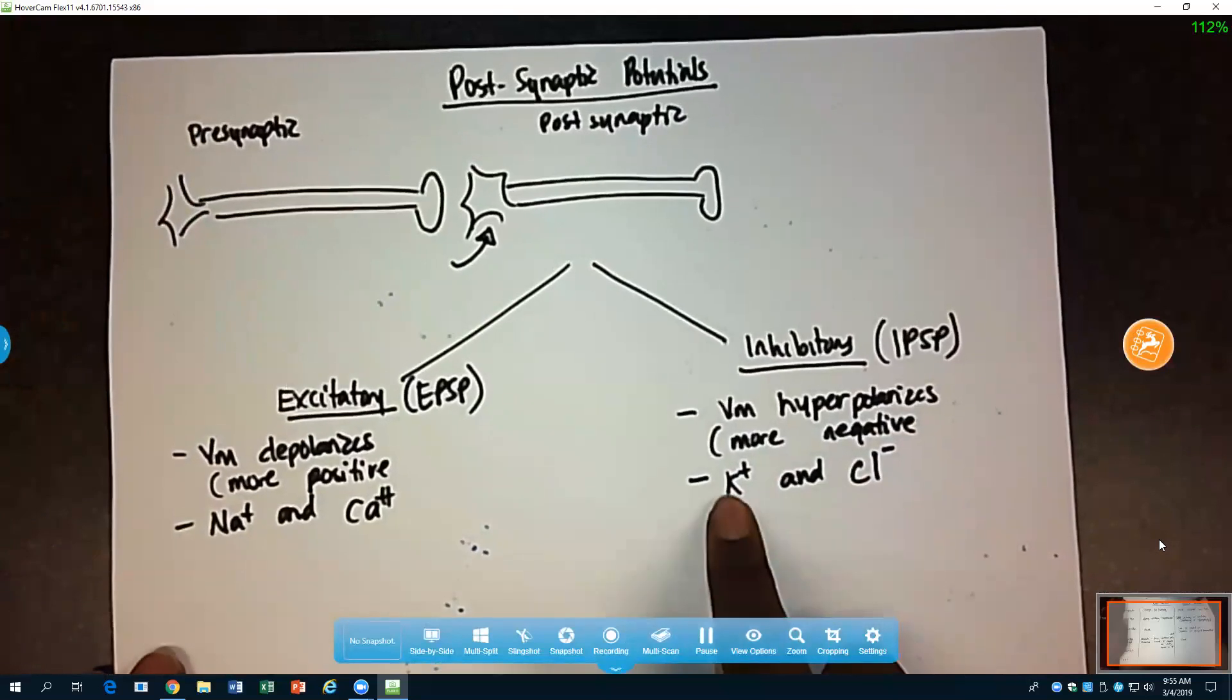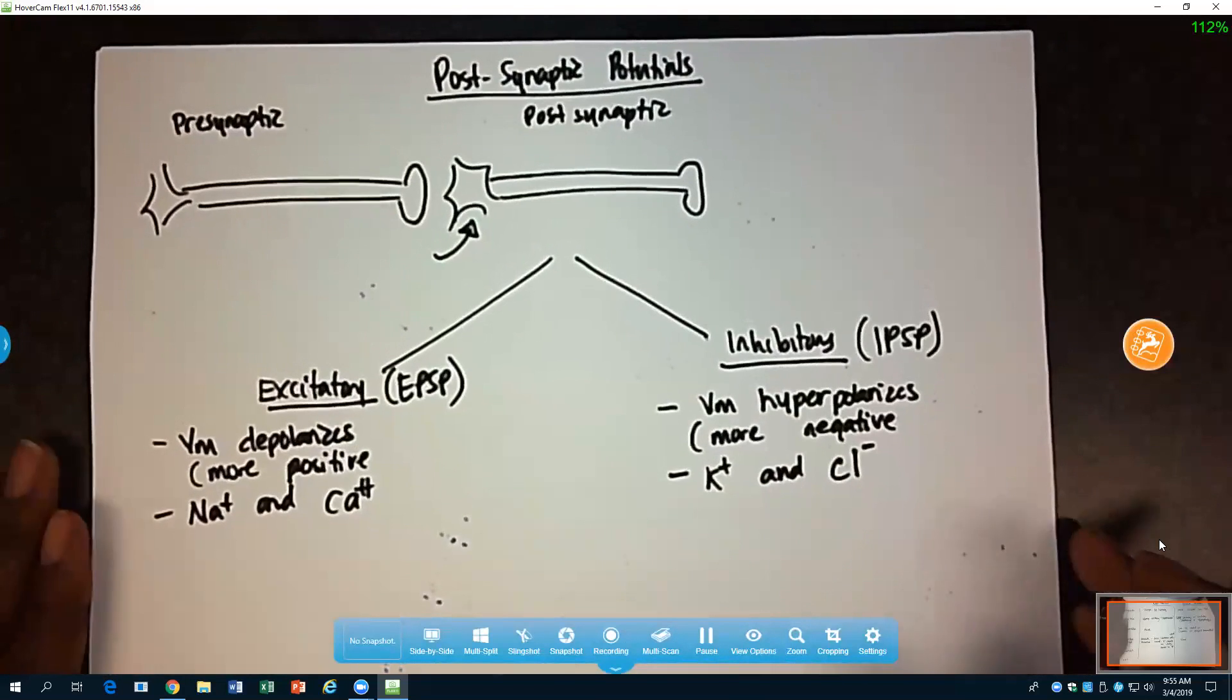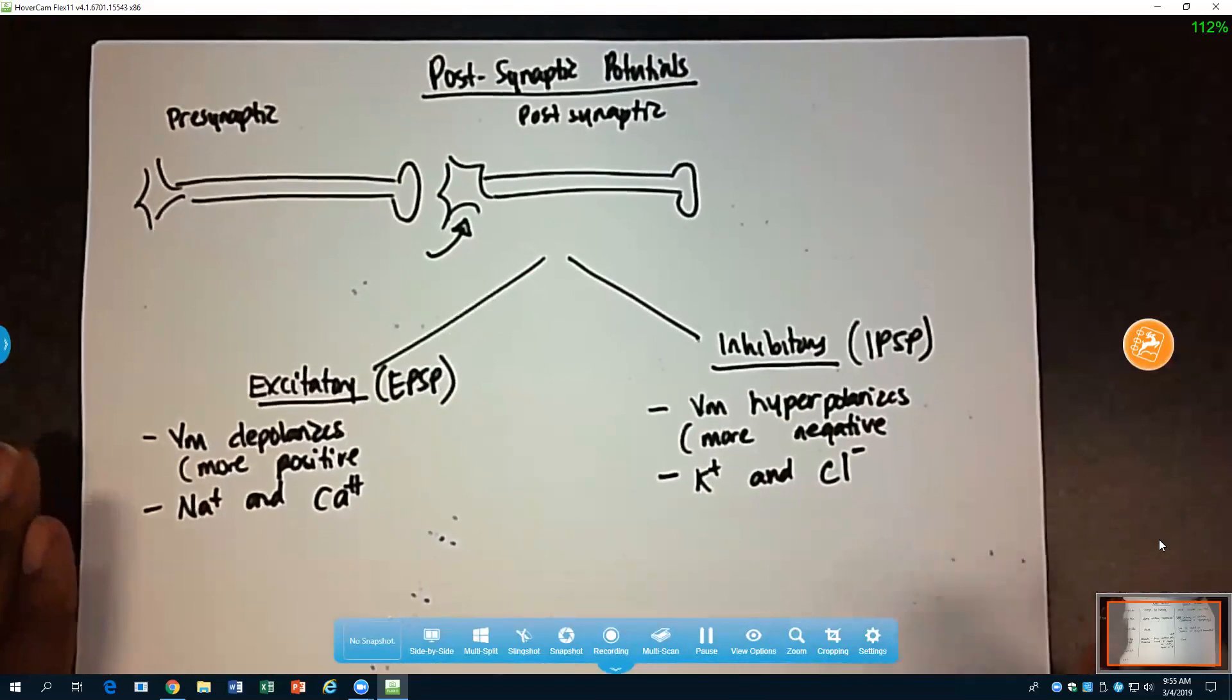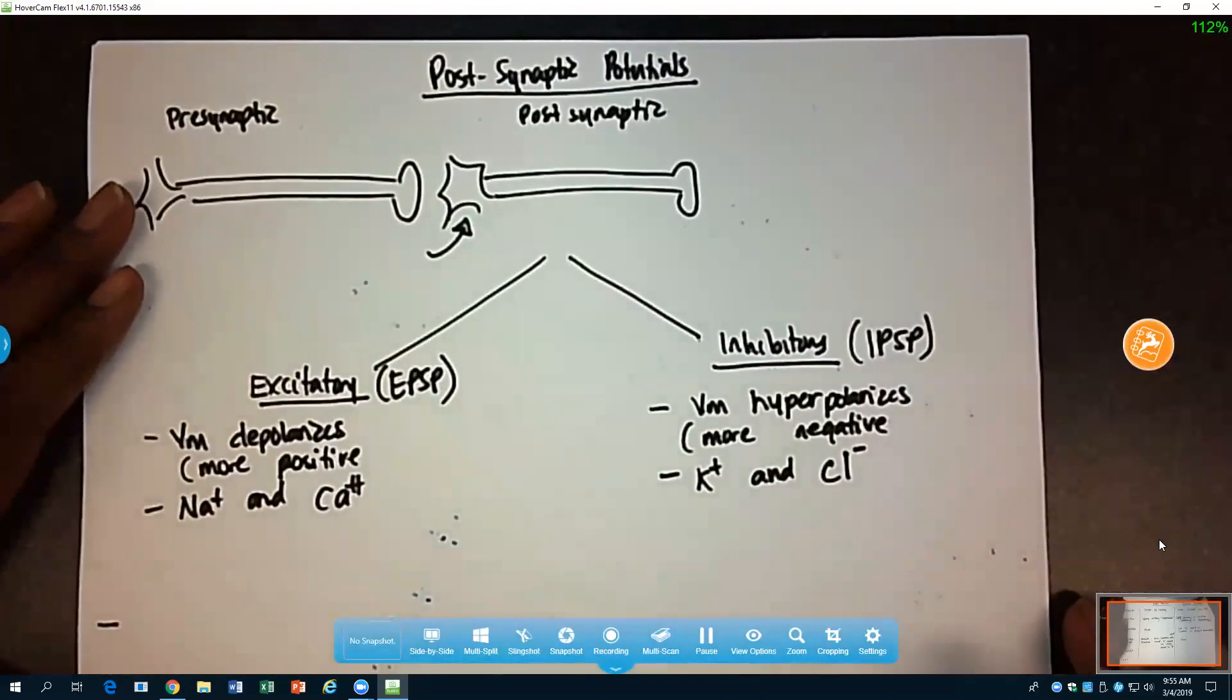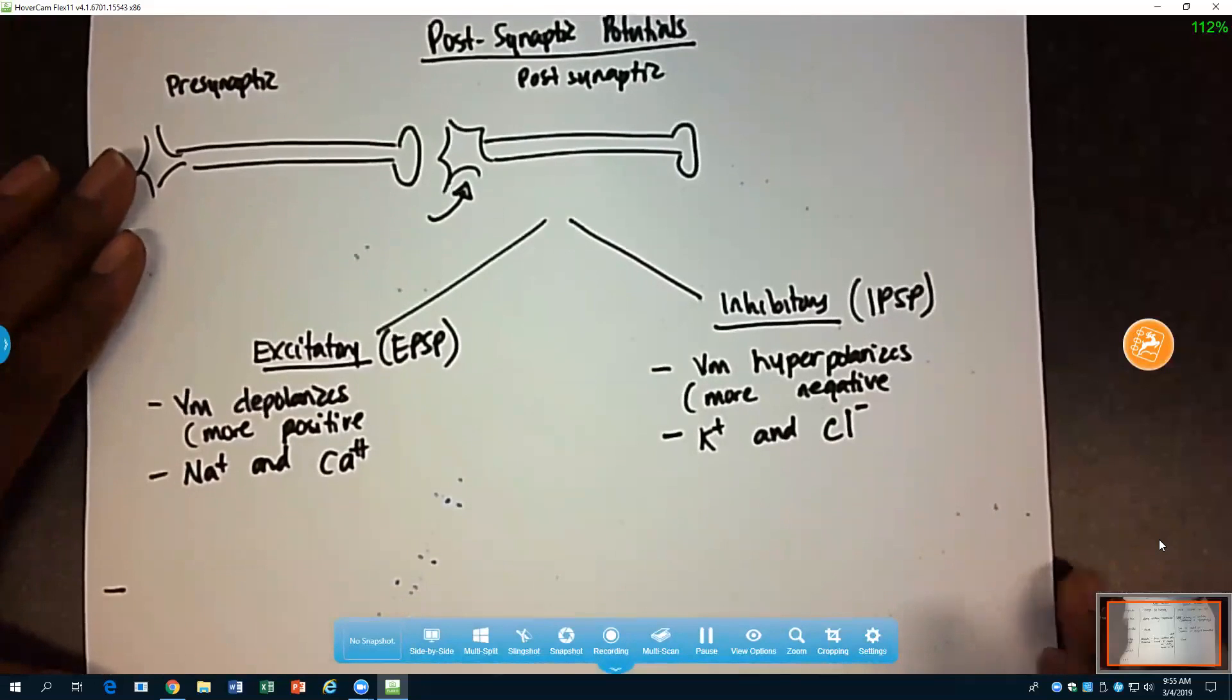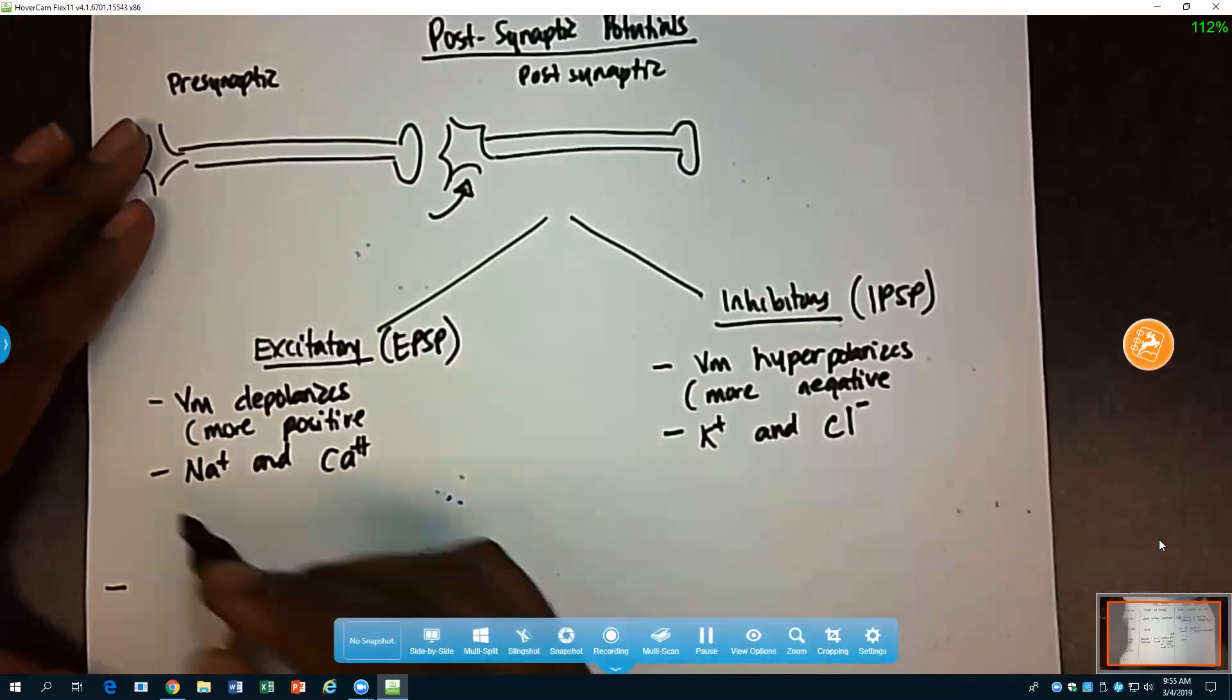Okay, so the efflux, or the movement out of potassium, or the influx of chloride, would hyperpolarize the membrane or make it more negative. And so what we really do is we integrate both of these signals. What was the process that we call that? We call that process something specific.